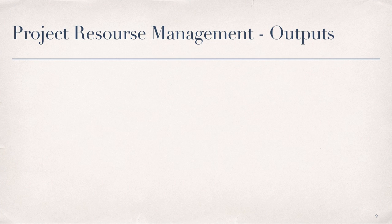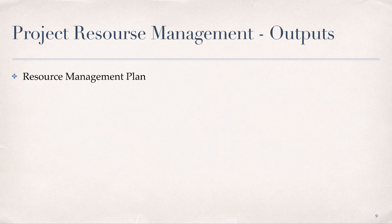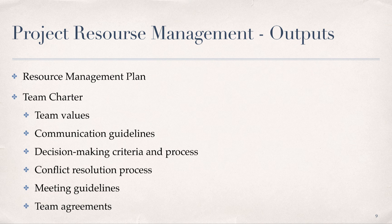According to the PMBOK, there are two project deliverables or outputs associated with the project resource management plan processes. These include the resource management plan and the team charter, which outlines the team values, communication guidelines, decision-making criteria and process, conflict resolution process, meeting guidelines, and team agreements.